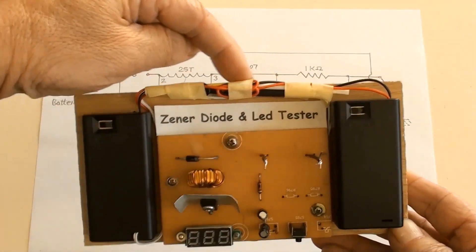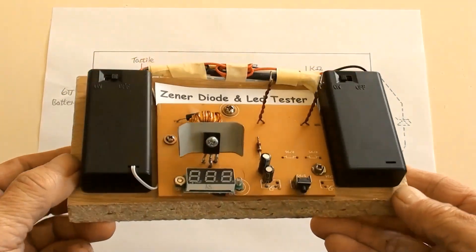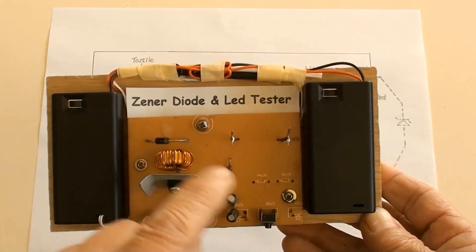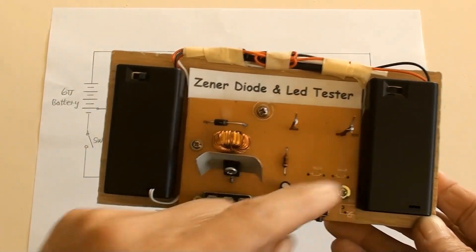Those are the circuit wires connected. The battery pack switches are here, and shown there in the diagram.